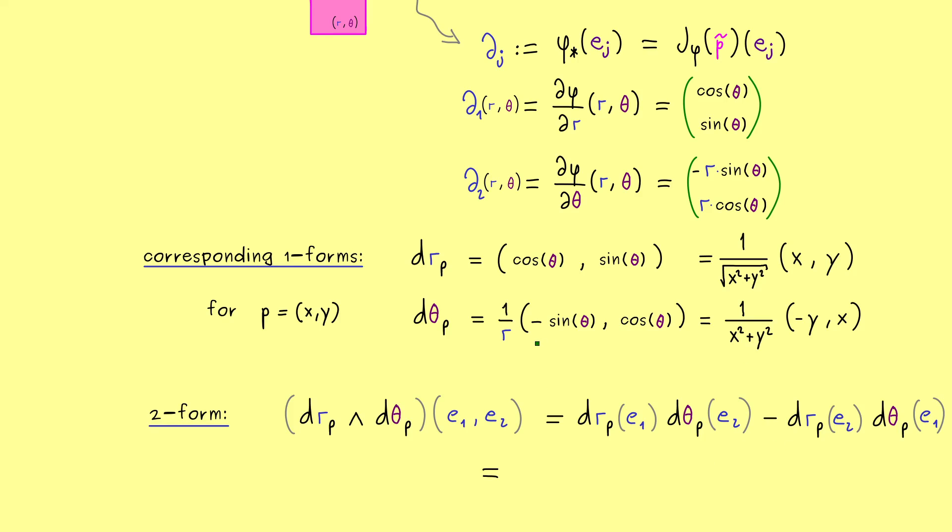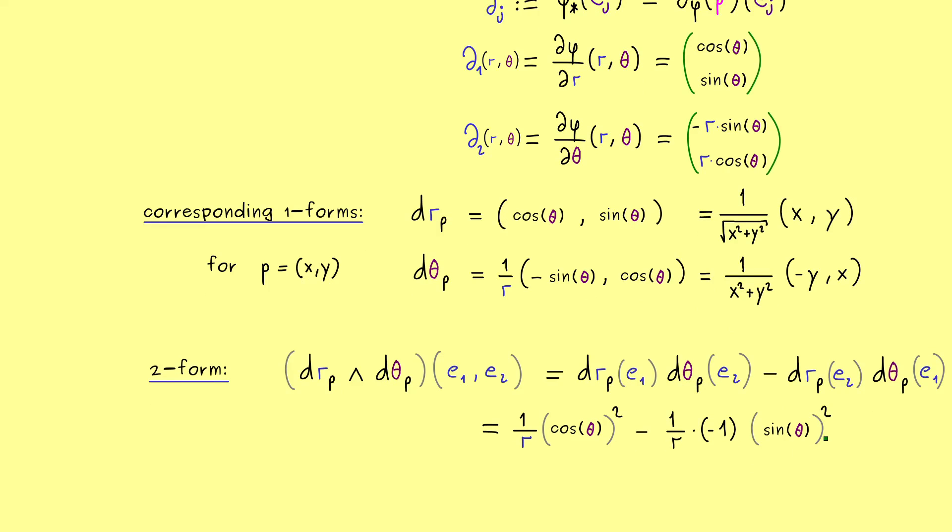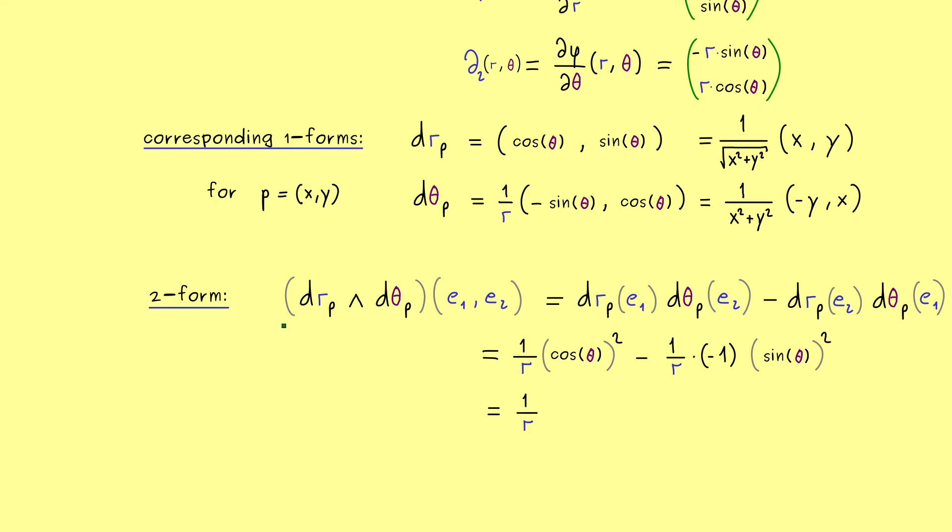Therefore now let's do it here. So the calculation is simple. We have dr(e₁) times dθ(e₂), and then minus with flipped orders. Then I would say let's use the representation with r and θ variables. Because then the first thing here is just 1/r times cos² minus 1/r times (-1) times sin². So we see cos²+sin² equals 1. So the only thing that remains is 1/r. Or in other words, instead of the determinant in ℝ² we can write r dr∧dθ. So that's something you should remember. This is the volume form represented with polar coordinates. And here please recall we already know that the determinant is dx∧dy.